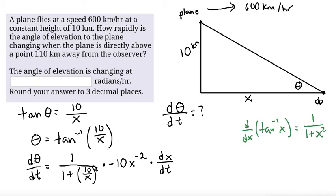Okay, so now we've found our derivative. To find where the angle of elevation is changing, we have some variables that we can just plug in numbers for because we know that our x will be equal to 110. We also know our dx/dt. That's how fast this x side length is changing with respect to time, which we were told is 600 kilometers per hour. So we can just directly plug that in as well.